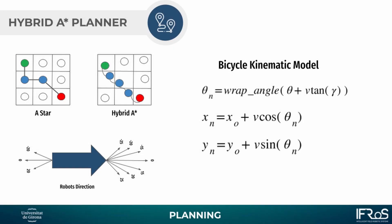Hybrid A* is the extension of the A* algorithm that considers continuous points in the grid map. It also considers the kinematic constraints of the robot, and using the Bicycle Kinematic model our robot can do 9 movements in the front direction and 3 movements in the reverse direction.